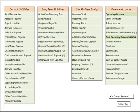This is sheet number two. I'll start scanning here with current liabilities, then we've got the long-term liabilities as well, followed by stockholders' equity and then the revenue accounts.